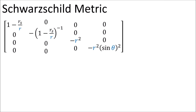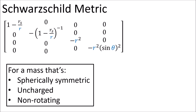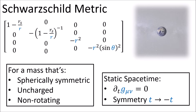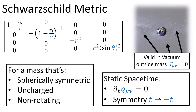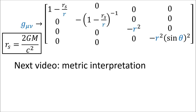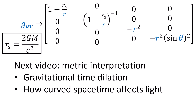To summarize, we derived the Schwarzschild metric — the spacetime metric for a spherically symmetric, uncharged, non-rotating mass — with the additional assumption that spacetime is static, meaning the metric doesn't depend on time and doesn't change when we reverse the time coordinate. This solution is only valid in the vacuum region outside the mass, and we treat the cosmological constant as negligible. In the next video, we'll interpret what this metric means, including gravitational time dilation, how it affects light, and how the Schwarzschild radius rs is the event horizon of a black hole beyond which light can never escape.